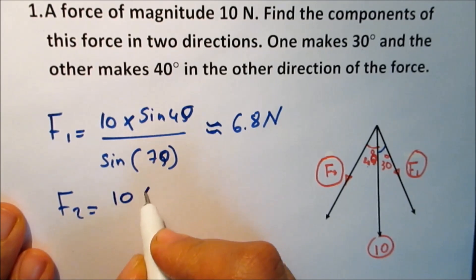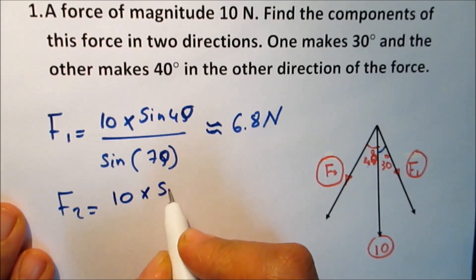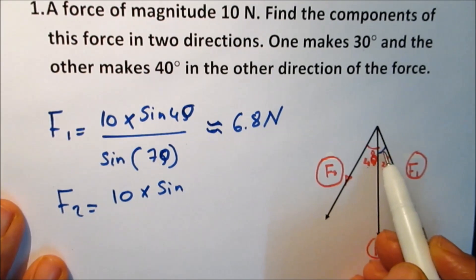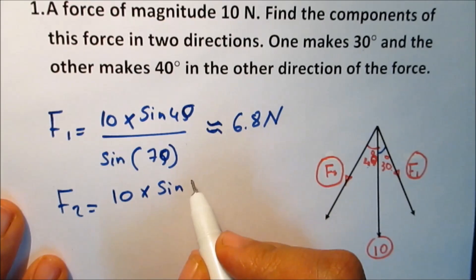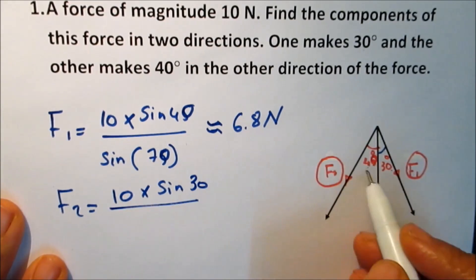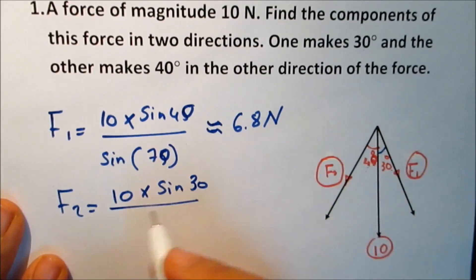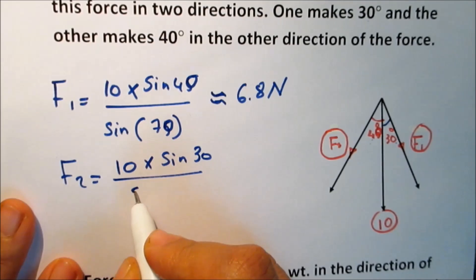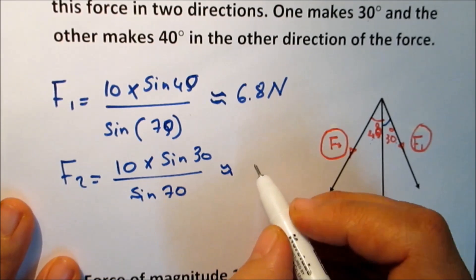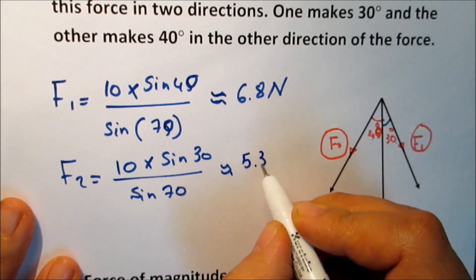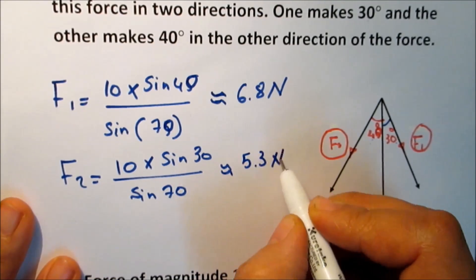F2 equals R times sine(30) over sine(70), which is nearly equal to 5.3 newtons.